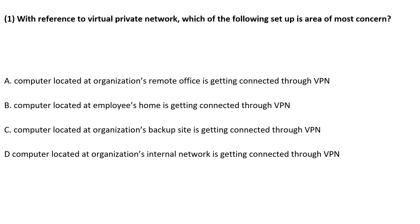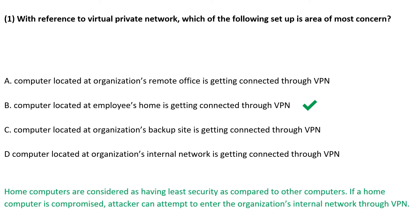Practice question: With reference to VPN, which of the following setup areas is the area of most concern? A computer located at an employee's home is getting connected through VPN. Home computers are considered as having less security compared to other computers. If a home computer is compromised, an attacker can attempt to enter the organization's internal network through the virtual private network.